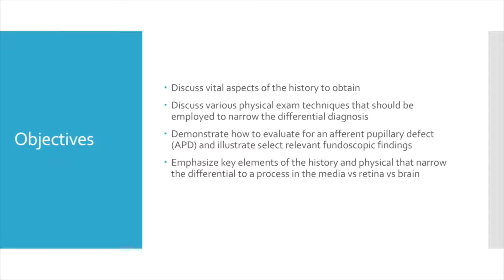In this video, we will discuss vital aspects of a history to obtain, various physical exam techniques that should be employed to narrow the differential diagnosis, we will demonstrate how to evaluate for an afferent pupillary defect, and illustrate selected relevant fundoscopic findings. We will also emphasize key elements of the history and physical that will narrow the differential to a process in the media versus in the retina versus in the brain.